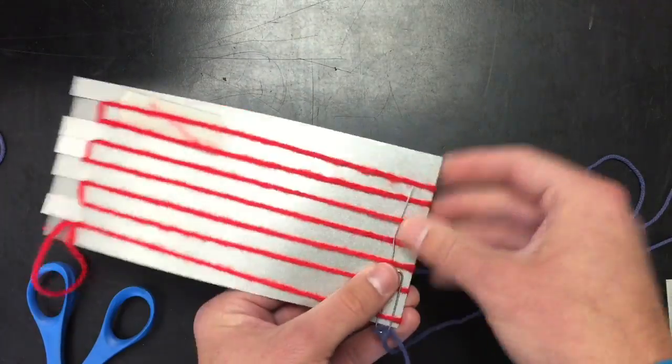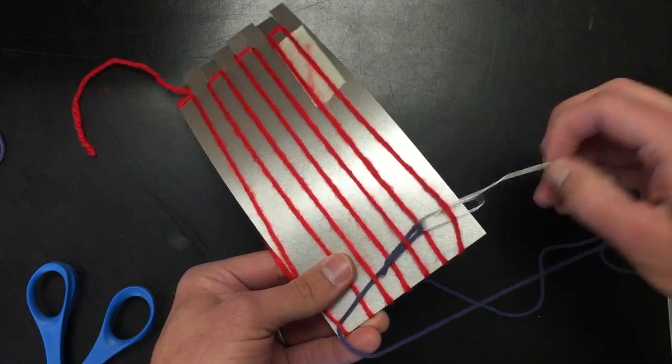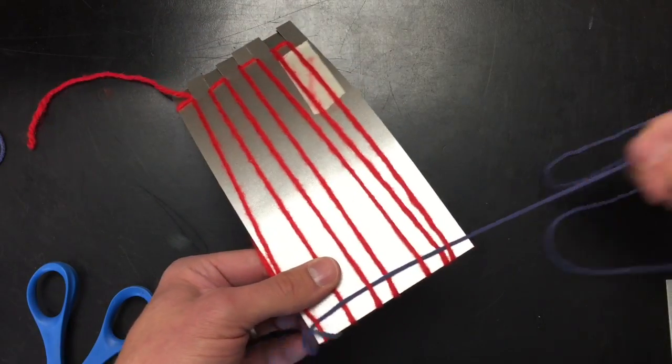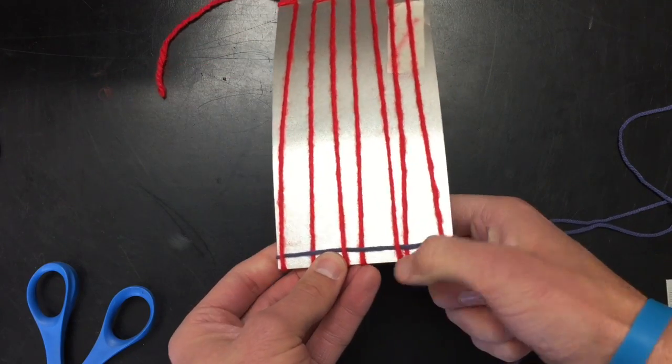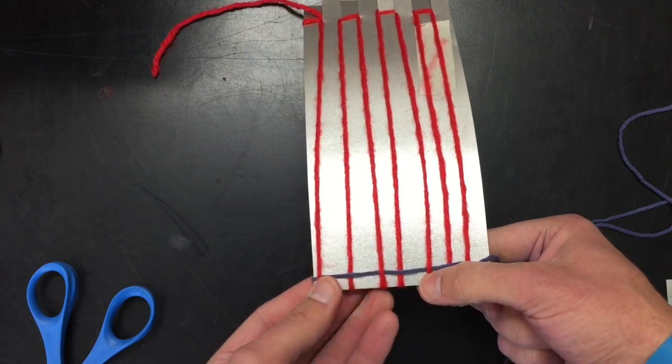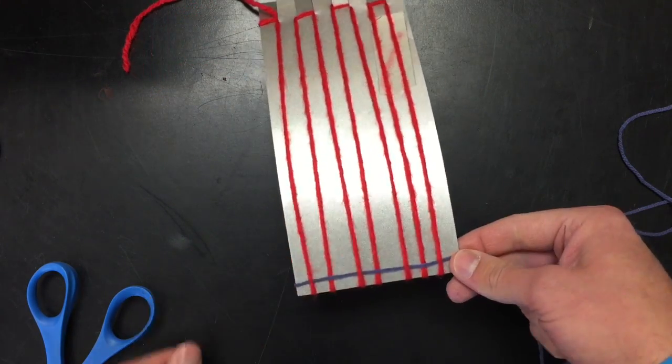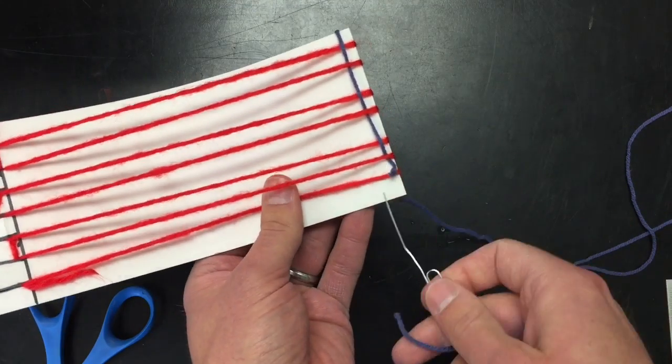You're then going to flip the cardstock over and continue on. Over, under, over, under, over, under. Make sure that where you start on this back side is the opposite of where you start on the front side. Once you do that, you can straighten out the warp strings, push the weft strings down a little bit, and then flip the cardstock back over and do the opposite of how it was gone through the first time.